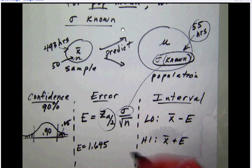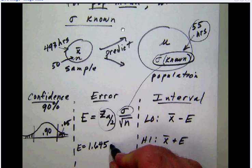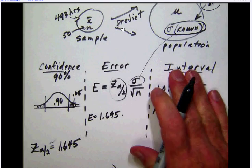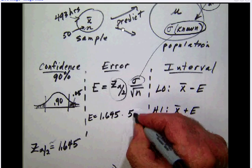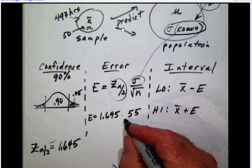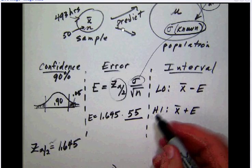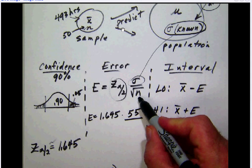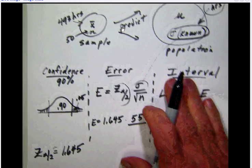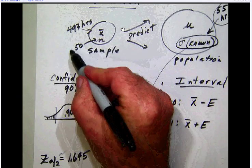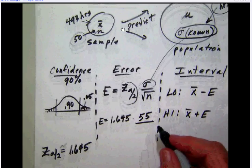We can simply bring that down and plug it in. Then we need to divide by the square root of n. Remember, n is our sample size, and over here we had that, our sample size was 50.